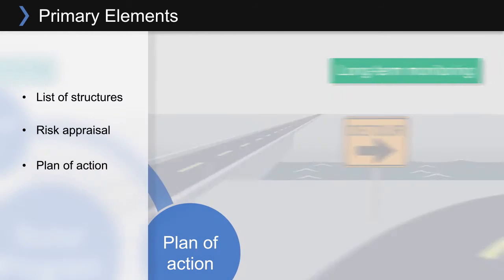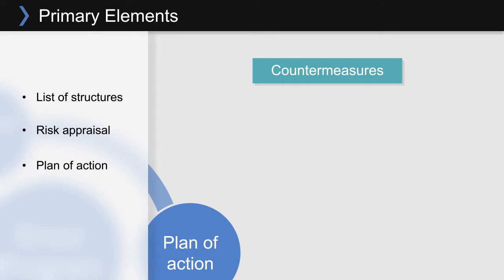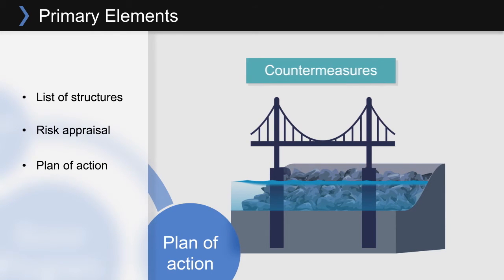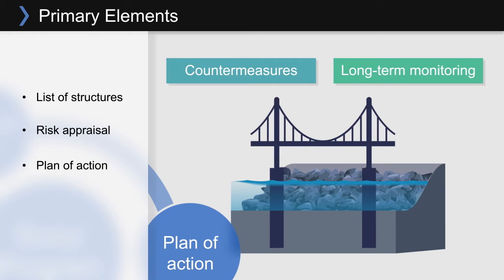For other structures, however, the plan of action will specify countermeasures to mitigate scour. For example, an agency might plan a structure retrofit with deeper pile foundations, or its banks reinforced with riprap. Typically, agencies use cost-benefit analysis to determine if long-term monitoring or countermeasures are the most appropriate plan of action.